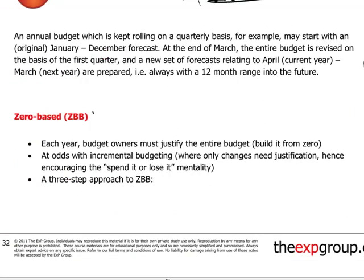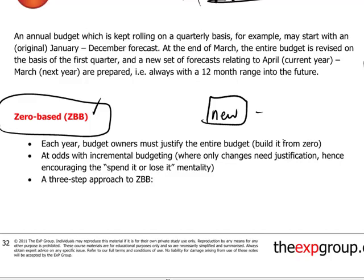Zero-based budgeting is a rather radical approach. It suggests that at the beginning of a new budgetary period, anything that's been approved or operated in the past is considered to be in the past, and therefore any new expenses have to be justified based on a completely new set of assumptions. The zero-based budget is, if you will, a tabula rasa — starting with a fresh blank piece of paper and building up the budget for the next period from basic principles, taking nothing for granted from the previous period.